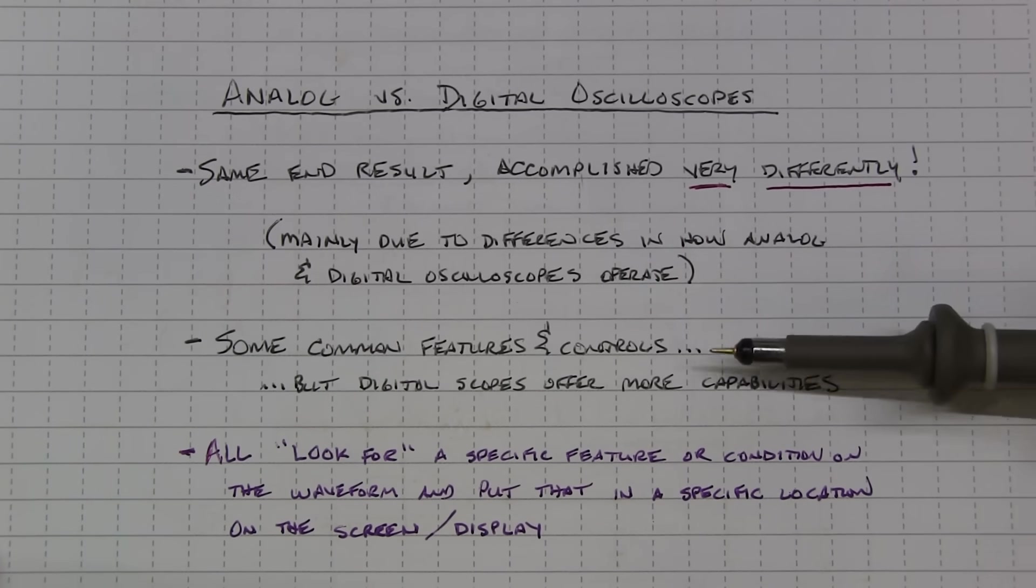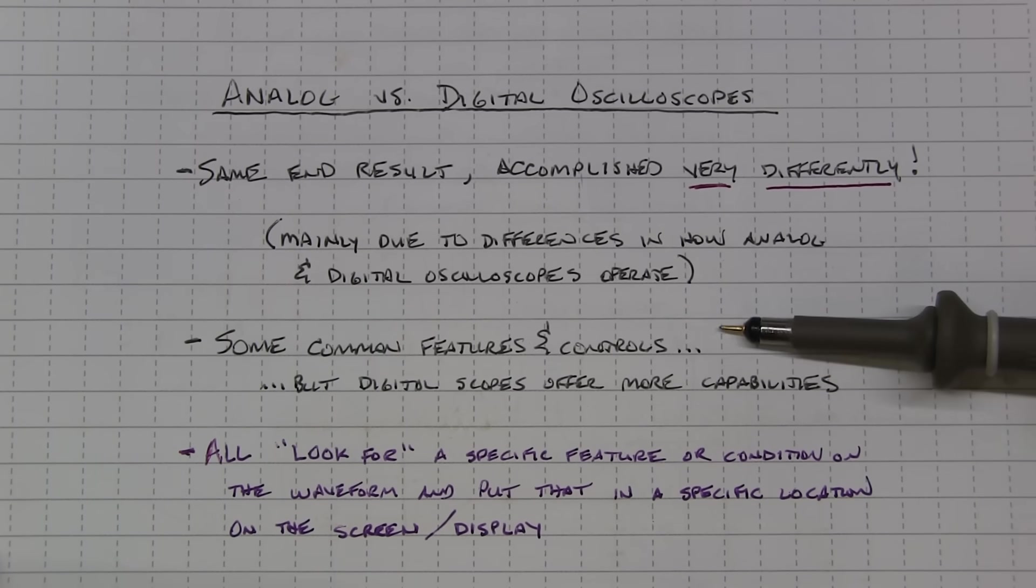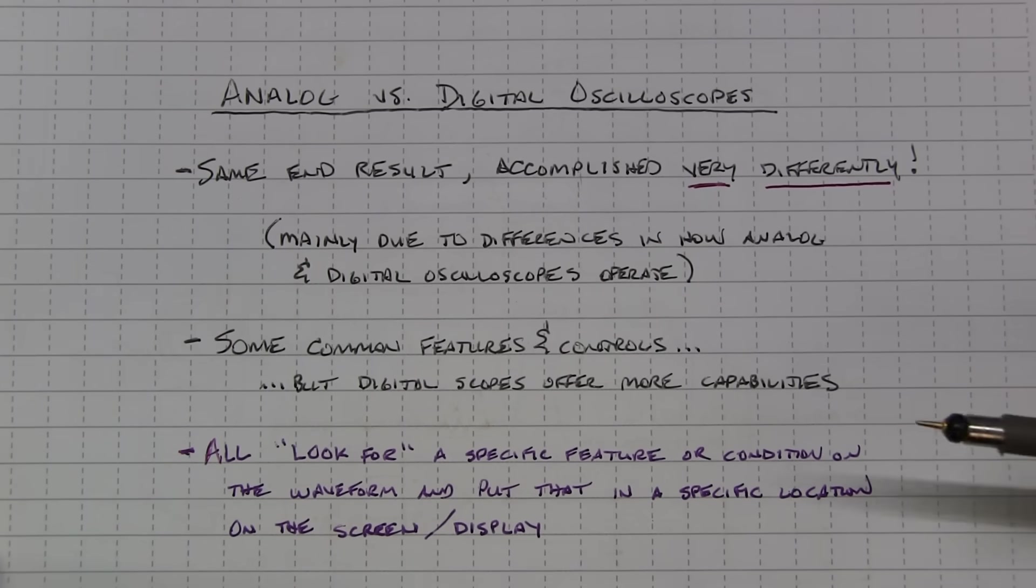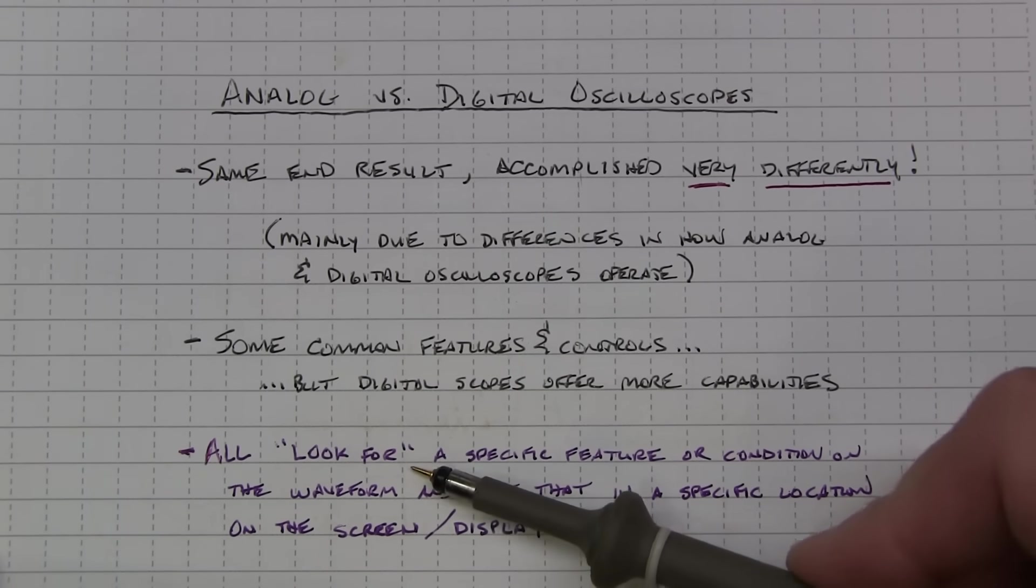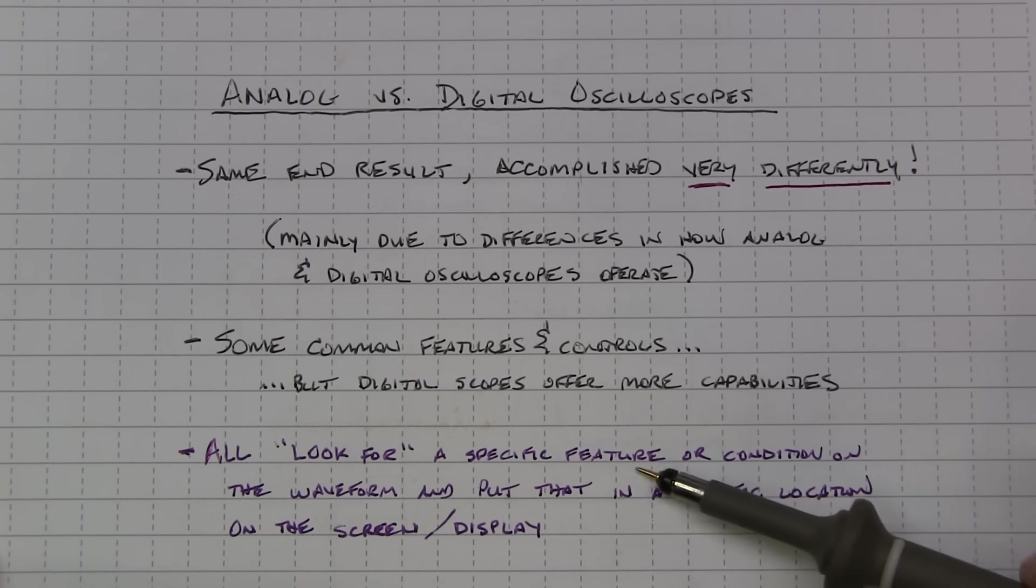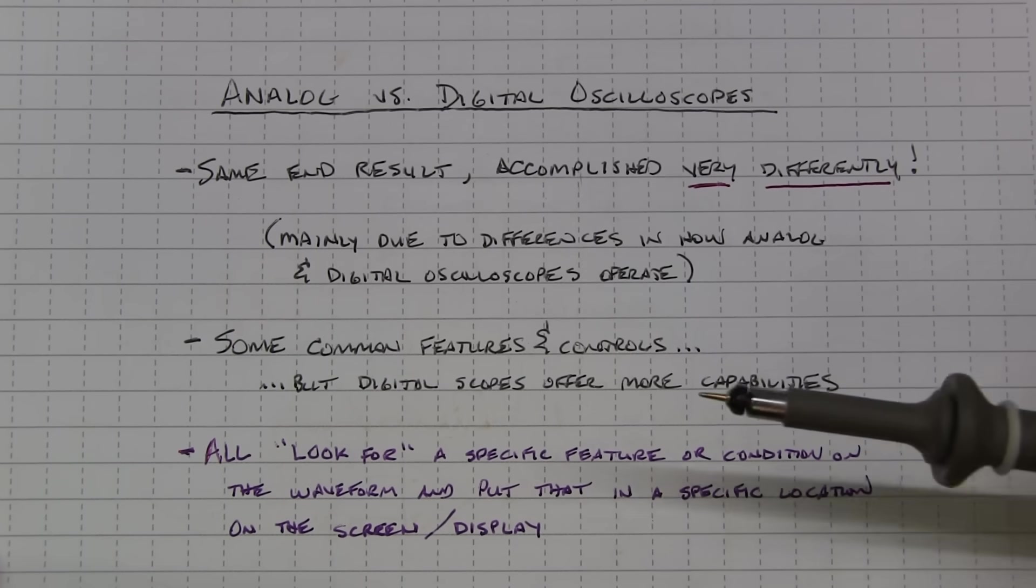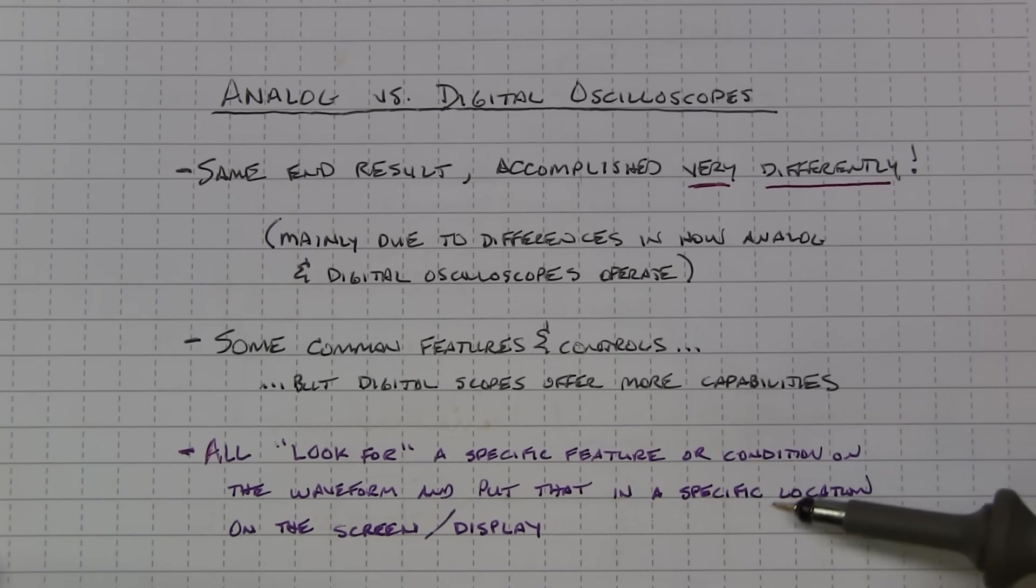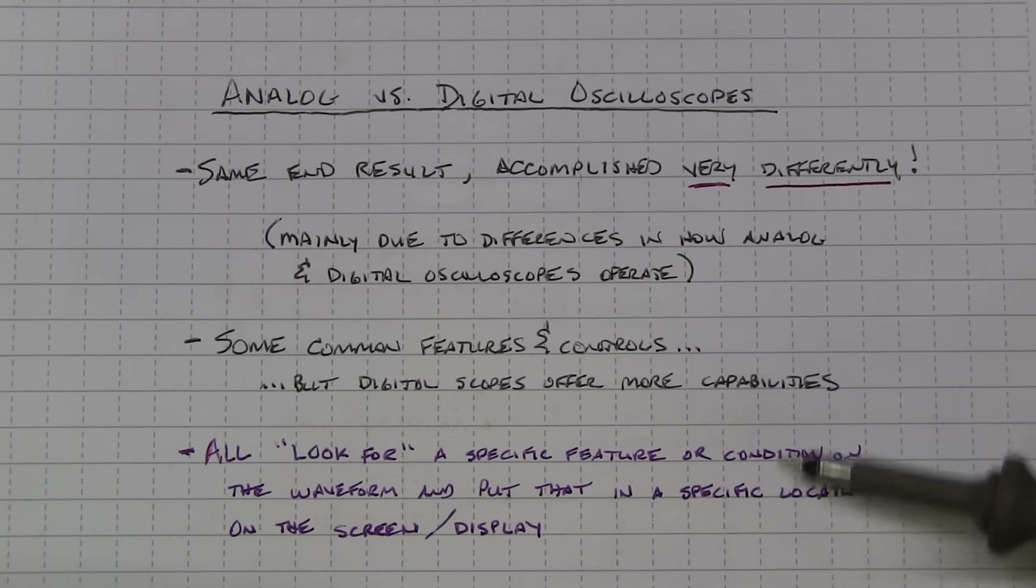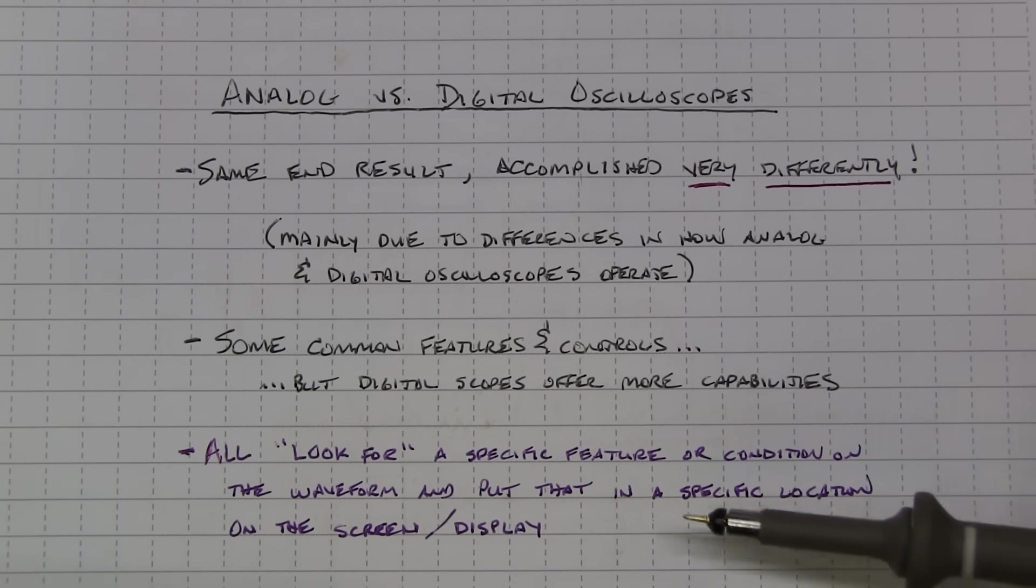Now there are some common features and controls. But digital scopes offer a whole lot more in terms of capabilities and options. But one common feature about triggering on analog and digital scopes is that the trigger is set up to essentially look for a specific feature or condition on the waveform and put that specific feature in a specific location on the scope screen and display the waveform around that point.